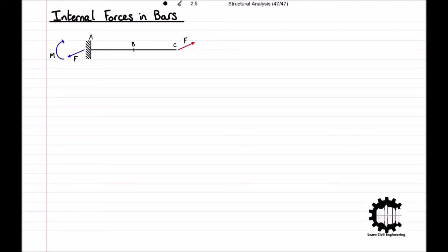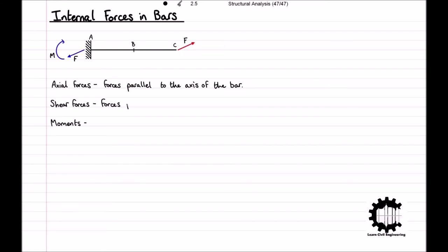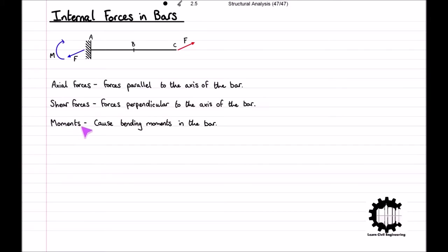Whereas within truss structures we saw that bars can only carry axial forces, which are forces parallel to the axis of the bars, bars within general structures can carry axial forces, shear forces, and moments, where shear forces are forces perpendicular to the axis of the bars and moments cause bending in the bars. Therefore, at point B in the bar there will be an internal force parallel to the bar, an internal force perpendicular to the bar, and a moment.